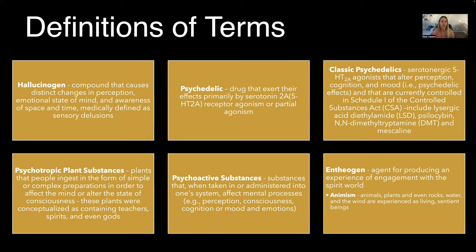Hallucinogens are compounds that cause distinct changes in perception, emotional state of mind, and awareness of space and time. These are medically defined as sensory delusions. So a hallucinogen potentiates hallucinations. Psychedelics are a type of substance that exerts its effects primarily on serotonin — we're going to be talking a lot about the serotonin system.